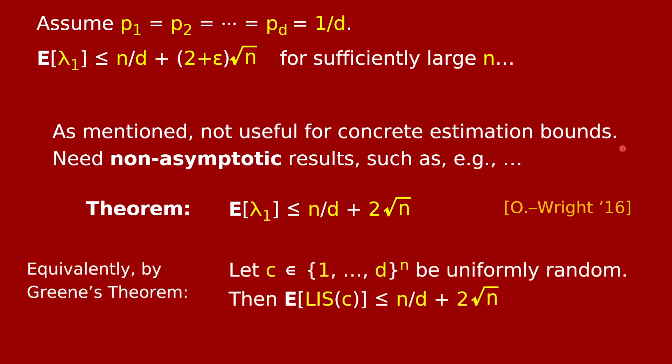Another way to state this result is as follows. This is equivalent by Green's theorem. If you take a uniformly random string of numbers of length n, where each number is uniformly chosen between 1 and d, and you look at the length of the longest increasing subsequence in it, the expected value of that length is at most n over d plus 2 times root n. And remember, if you just take the most common element in the string, that will in expectation always be at least n over d, and therefore the expected longest increasing subsequence is at least n over d. So this gives a concrete upper bound plus 2 times root n for the expected value of this longest increasing subsequence.